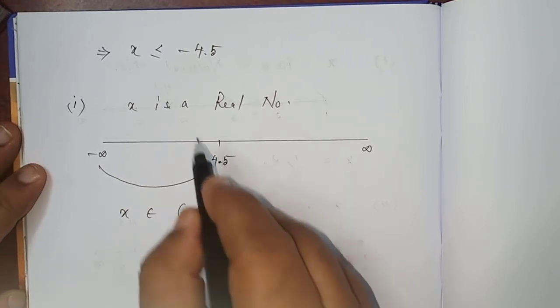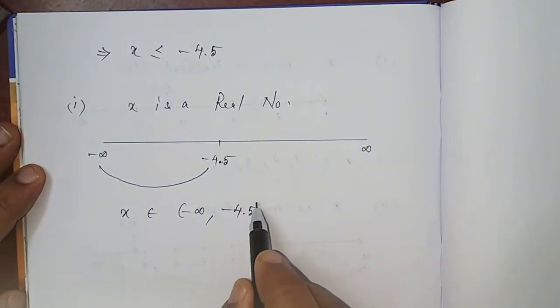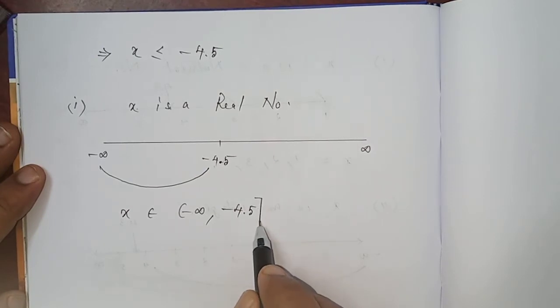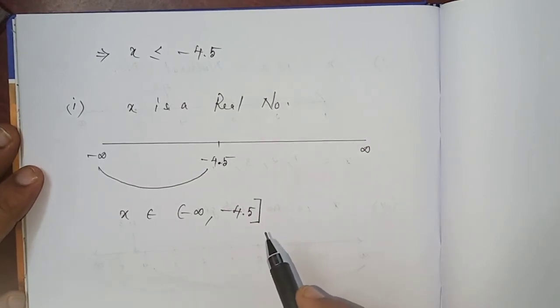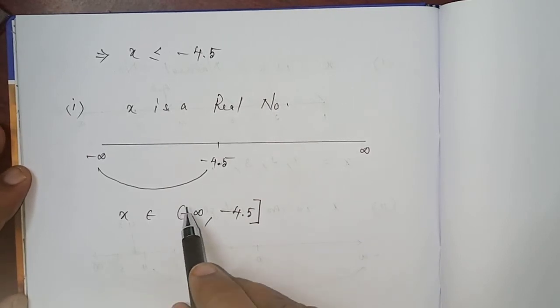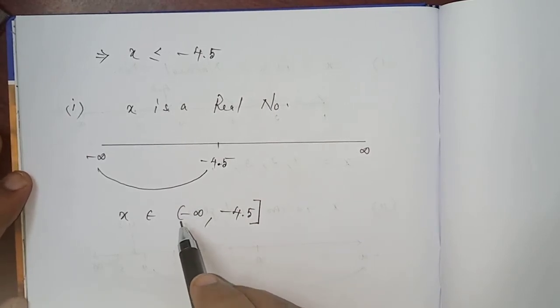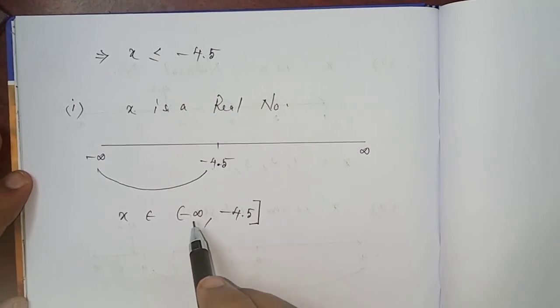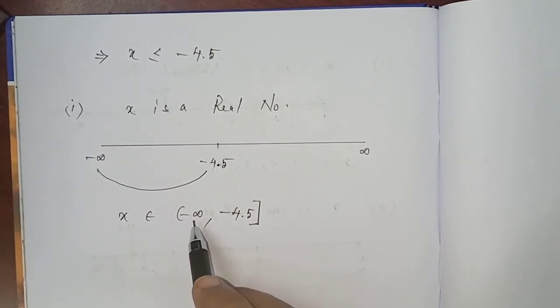Okay? So, including that -4.5, you can put the bracket like this, right closed. Always infinity and minus infinity, bracket like this only - left open or right open only for minus infinity and plus infinity. Remember.